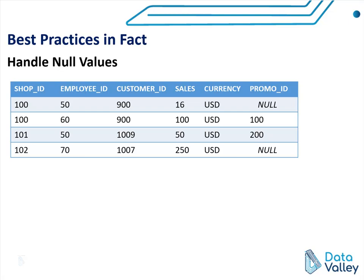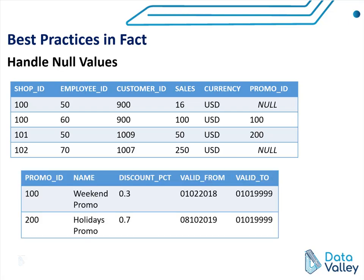As we see here, we have two records with null promo ID or null promo code, which is normal because not all operations will have a promo ID. We also have a dimension for promo codes, which has all promo code details like the name of the promo code, discount percentage, valid from, and valid to. Now, if we are going to generate a report based on measures in this fact table, let's say a report to show revenue distributed by promo code.